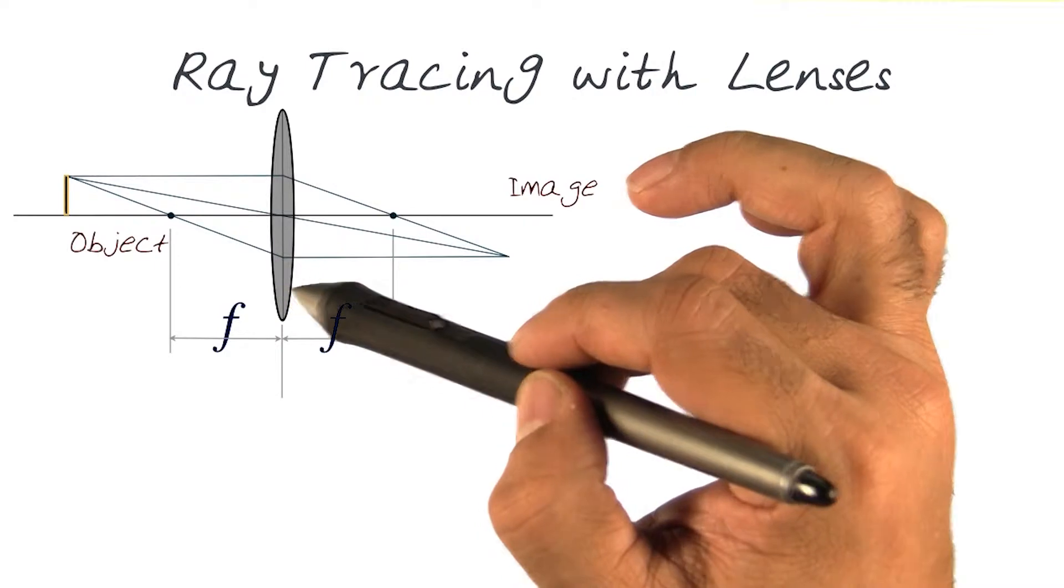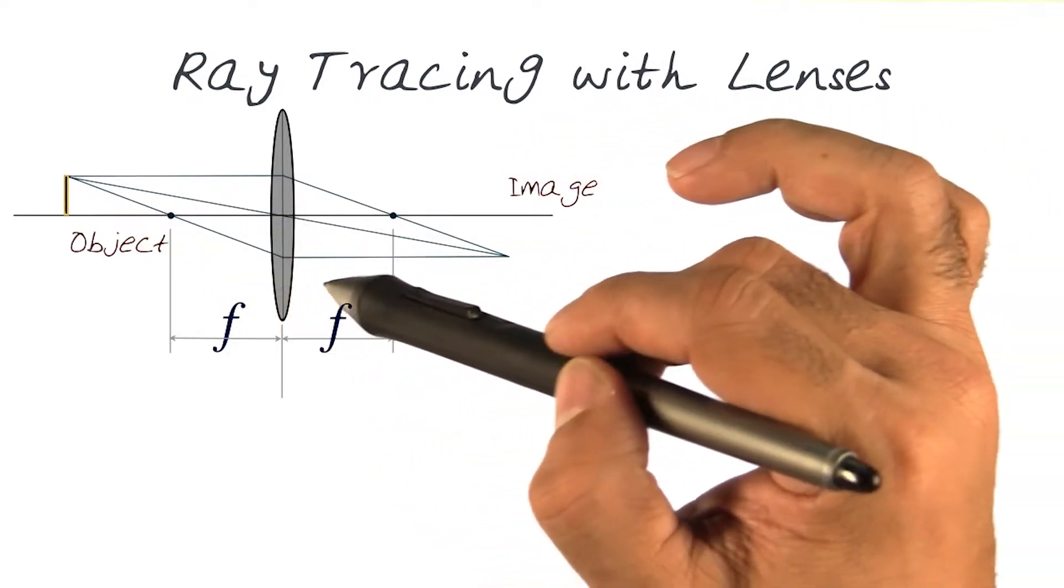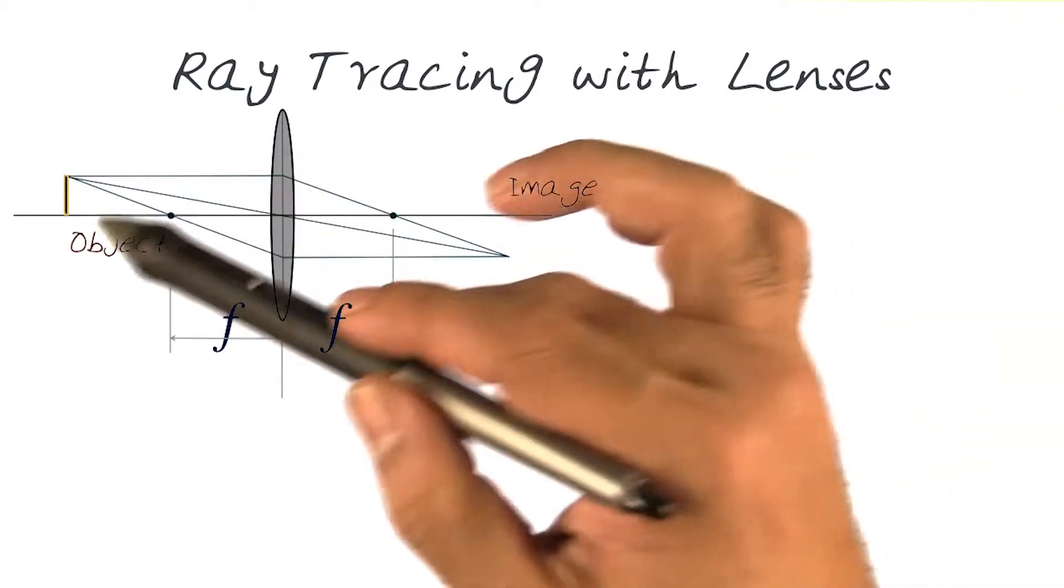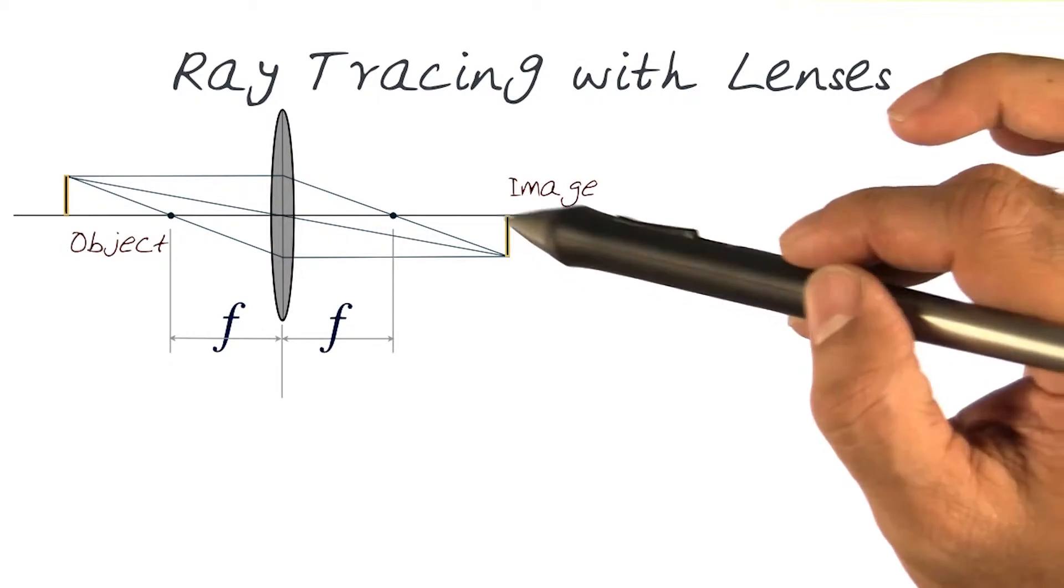And then the third line, of course, the opposite or the converse of this one: anything that goes through the focal point will become parallel on the other side. So in essence, these three lines will converge at this point, and this is where the image will be formed.